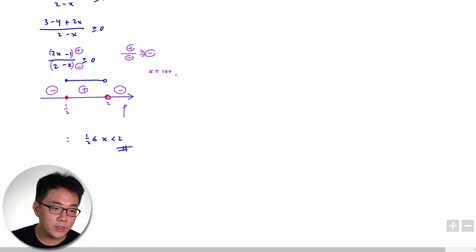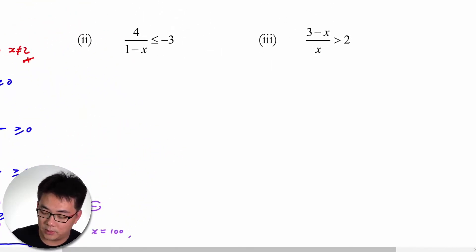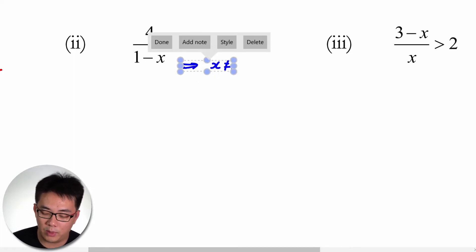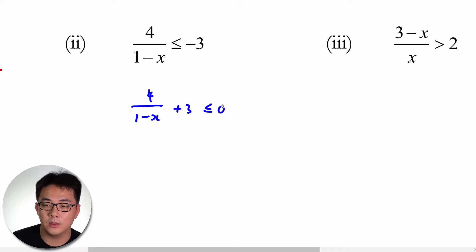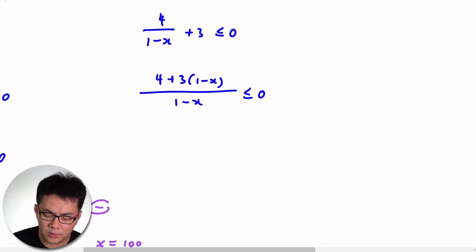Now I'll give a few more examples. The next question is similar. When solving this inequality, take note that x cannot equal 1 because it renders the function invalid. We move terms over to get 4 over (1 minus x) plus 3 less than or equal to 0, then combine into a single fraction: [4 + 3(1 minus x)] over (1 minus x) less than or equal to 0.